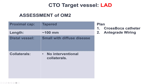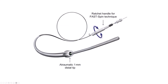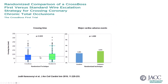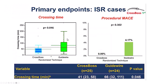So antegrade was the plan. And because of the in-stent location, we decided to first start with a CrossBoss catheter, based on the randomized trial — CrossBoss first — showing that when we tried to cross using the CrossBoss, there was more efficient crossing for in-stent lesions compared to guidewire crossing.